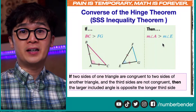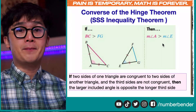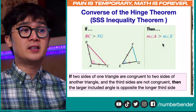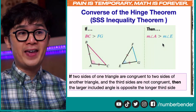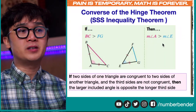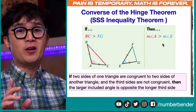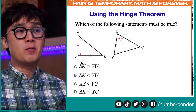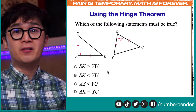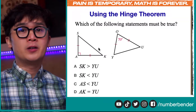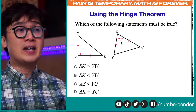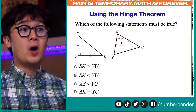The side-side-side inequality theorem states that if two sides of one triangle are congruent to two sides of another triangle and the third sides are not congruent, then the larger included angle is opposite the longer third side. We're going to be using the Hinge Theorem to identify, among the four choices, which statement must be true, knowing that triangle SAK is a right triangle and YOU is an acute angle with 70 degrees given at angle YOU.